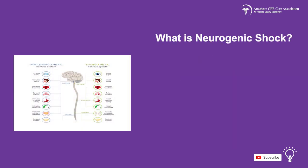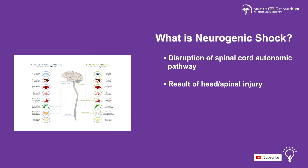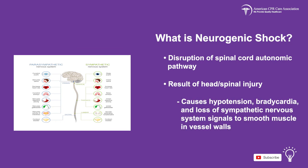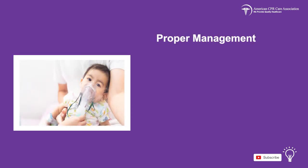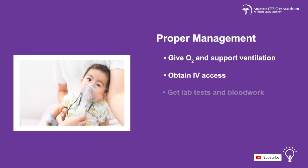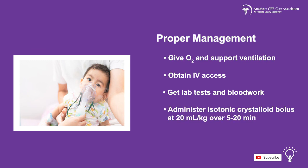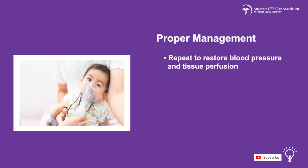The final type of distributive shock is neurogenic shock. In this type of shock, there is a disruption of the autonomic pathway of the spinal cord. This is the result of head or spinal injury, which causes hypotension, bradycardia, and loss of sympathetic nervous system signals to the smooth muscle in the vessel walls. To properly manage neurogenic shock, follow the same initial treatment as with other types of distributive shock: give the patient oxygen and support ventilation, obtain vascular access and get lab tests and blood work, and administer an isotonic crystalloid bolus at 20 mL per kg over 5 to 20 minutes, repeating to restore blood pressure and tissue perfusion, then conduct ancillary studies.